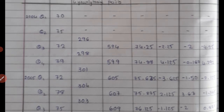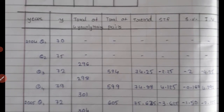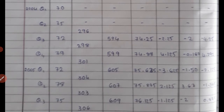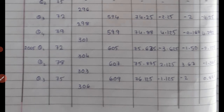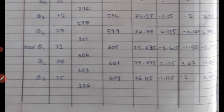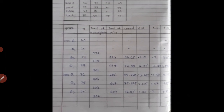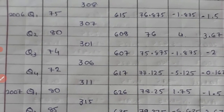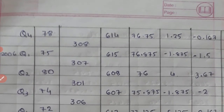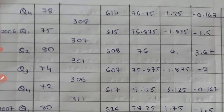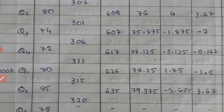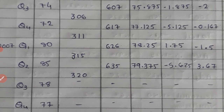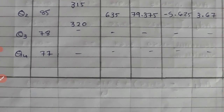The calculated STF answers are: minus 2.25, 4.125, minus 3.625, 2.125, minus 1.125, then 1.25, minus 1.875, 4, minus 1.875, minus 5.125, then 1.75 and minus 5.625.